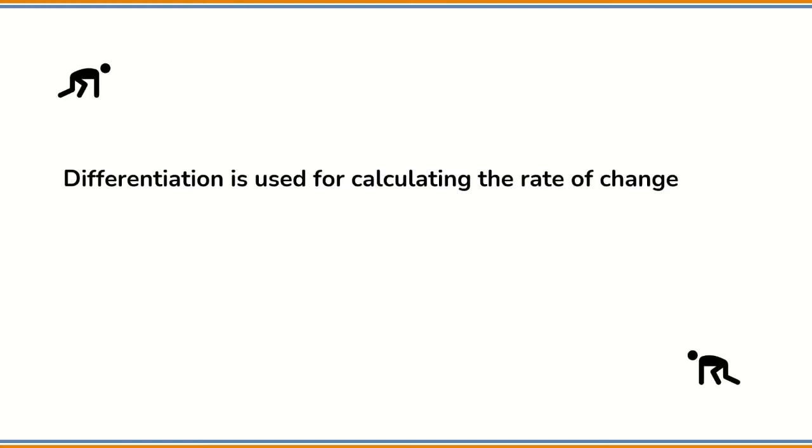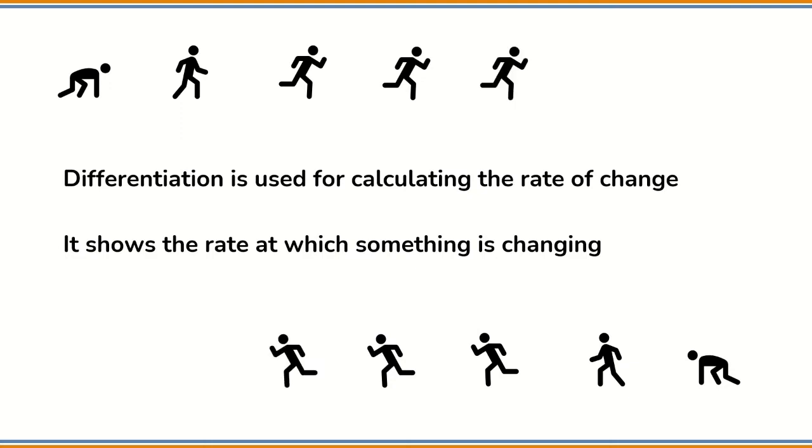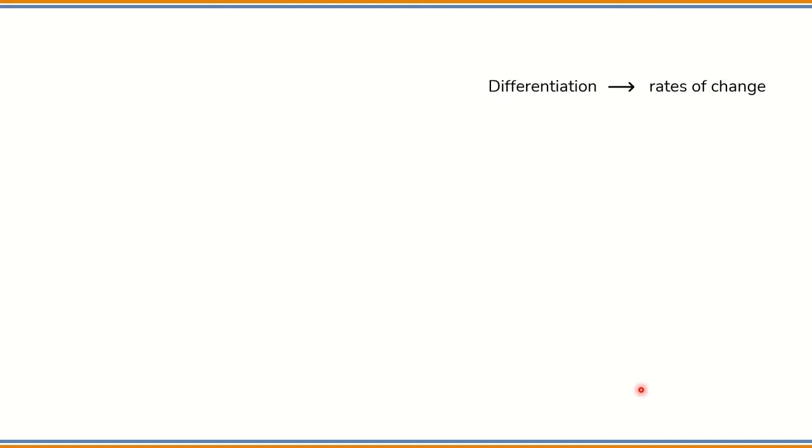Differentiation is used in maths for calculating the rate of change. It shows the rate at which something is changing. In the problems that we are going to solve, we will calculate the rate at which a function changes at any given point. We are going to work with functions. A function is just a mathematical expression that defines a relationship between two variables. For example, we have this function y equals x squared.